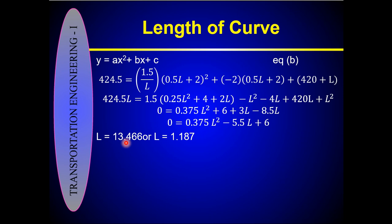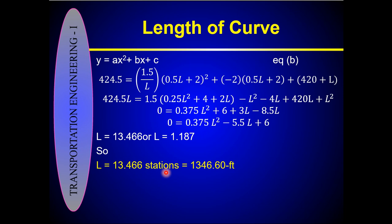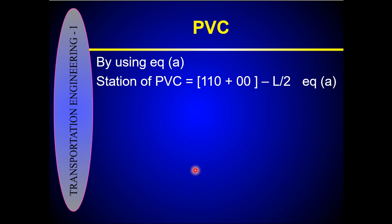After solving the equation we get two values: L = 13.467 stations or L = 1.187 stations. The value of 1.187 cannot be selected because the distance between the PVI and the street crossing is 2 stations, so the curve cannot be less than 2 stations. Therefore we select L = 13.467 stations, which can also be written as 1346.60 feet.